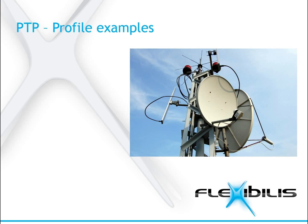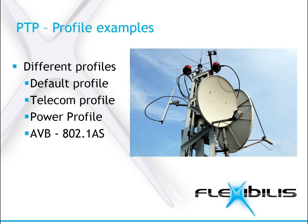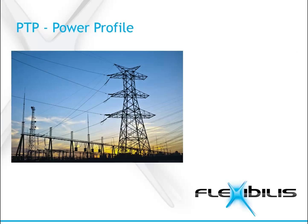Here are examples of different profiles. Note that there are more profiles than just the ones presented here. The default profile is currently the most commonly used one and uses UDP multicast. The telecom profile is used in telecom networks and uses UDP unicast. The power profile is meant for power system applications, and the AVB profile is for audio-video broadcast networks. FRS is able to support any profile currently defined. Next, we will look more closely at the power profile, since it is the profile most commonly used with FRS.